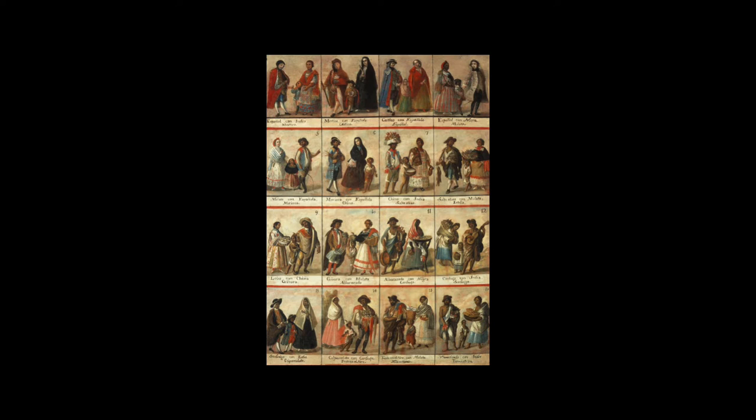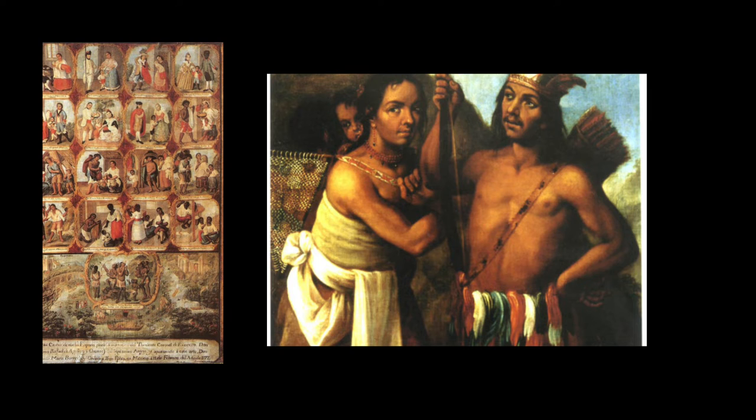In either case, each compartment or canvas represents an individual family group consisting of parents of two different races or castes and the offspring of their union. The typical series opens with Indian and Spanish heritage, which is increasingly reduced, ending with a monoracial family of feathered Indios Mekos or non-Christian Chuchimeks from the northern frontier, foreigners who were legally outside the colonial system.